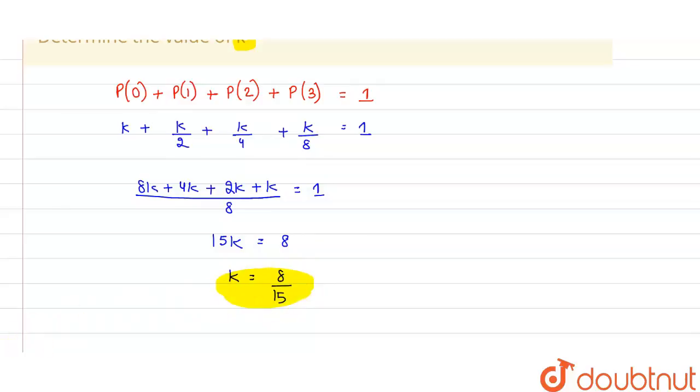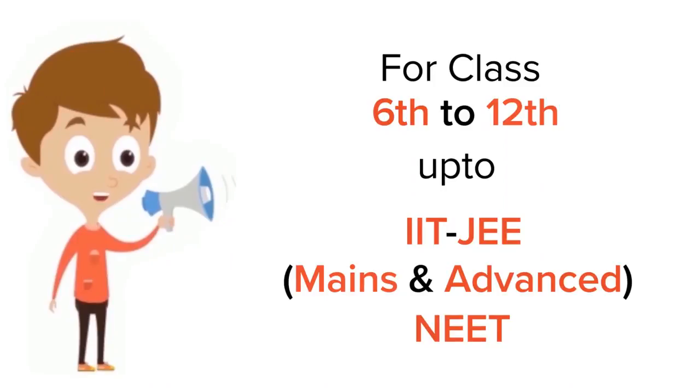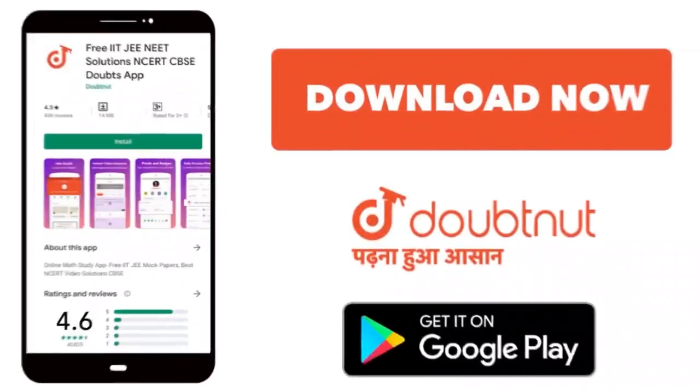So this is the value we have to find and we got it. So k value is eight by fifteen. Thank you. For class six to twelfth, IIT-JEE and NEET level, trusted by more than five crore students. Download Doubtnet app today.